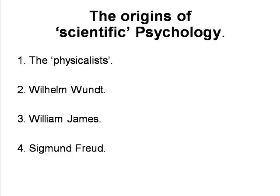In the section on the origins of scientific psychology, we have seven chapters. The physicalists — those practical experimenters from the late 18th century onwards, who mapped out the basic knowledge of the anatomy and functioning of the brain and of the nervous system in general.